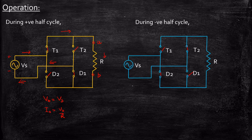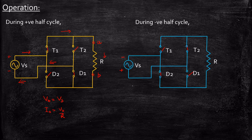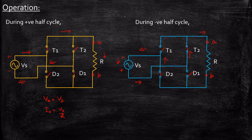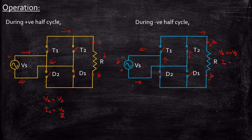During negative half cycle, the supply voltage will be minus and plus. Plus is connected to the anode of T2 and minus is connected to the cathode of D2. As a result, T2 and D2 are forward biased and T1 and D1 are reverse biased, and current flows through this path. Considering terminals A and B, the current flows in the same direction as previously and returns to the source through diode D2. The output voltage is still positive because the current flow is also in the same direction — Vout equals positive Vs. And Iout will be equal to Vout divided by R.